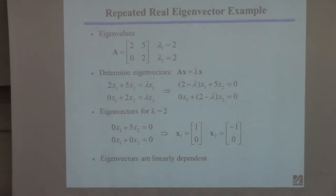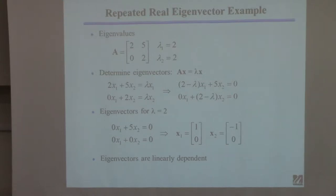Now we only have one eigenvalue, so it looks problematic, because before I said take each eigenvalue and plug it in. Well, we only have one eigenvalue, so I guess we'll just plug in that one and see what happens. If you plug in two here, it makes that term 0, and it also makes this term 0, so you're left with this.